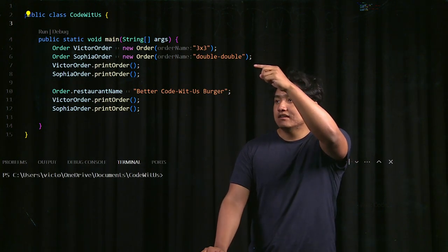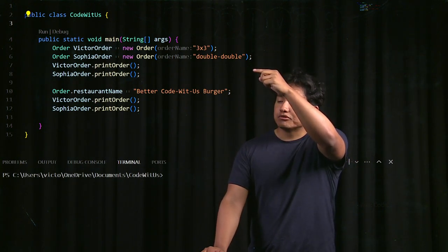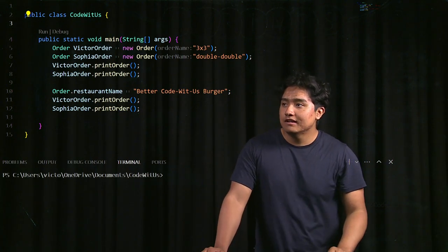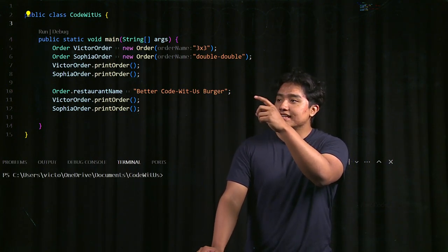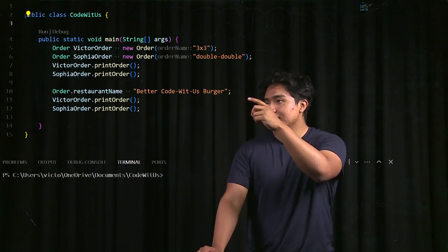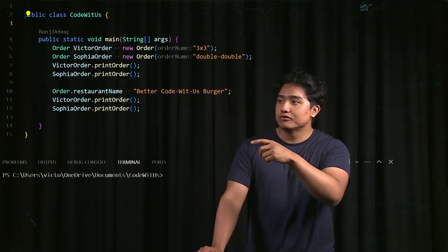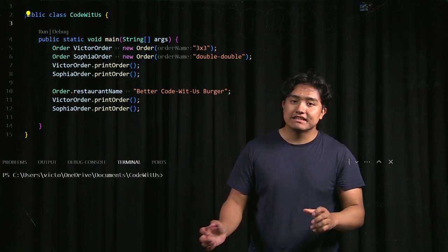And then we can print the order with our print order function that we defined earlier, and we can also see how setting the restaurant name class variable to better codewithus burger changes the orders for Victor and Sophia. So you can see how that changes all the instances.